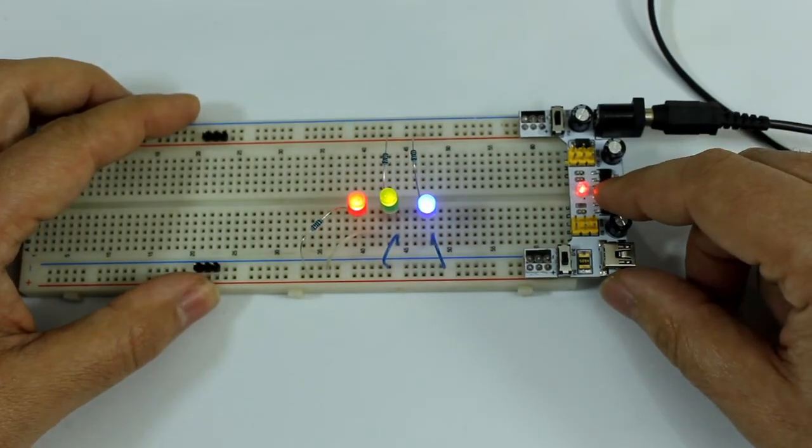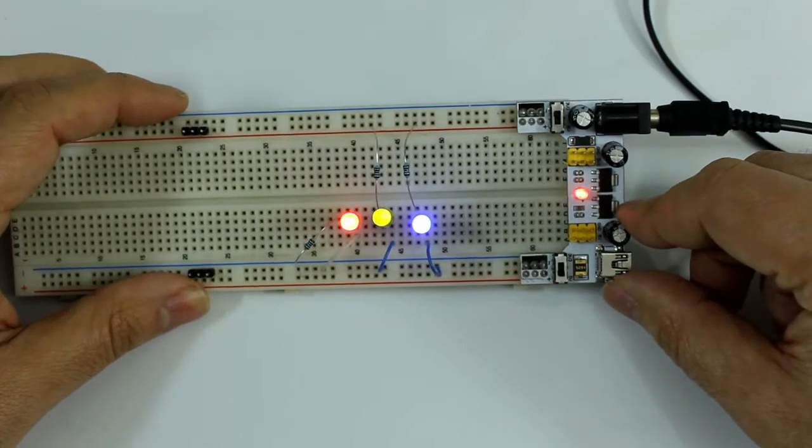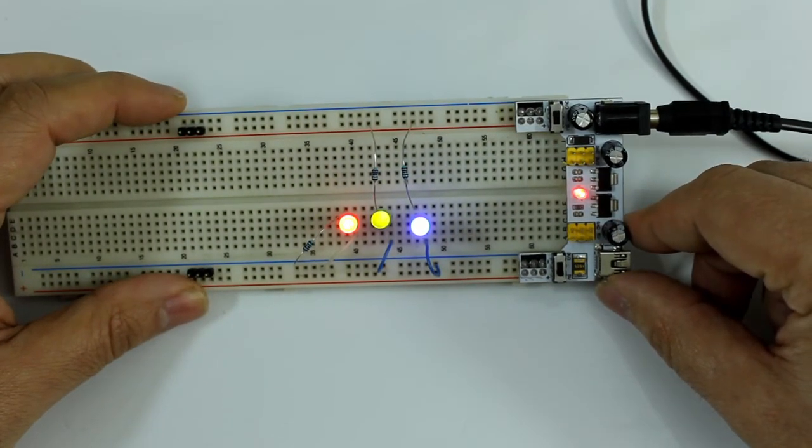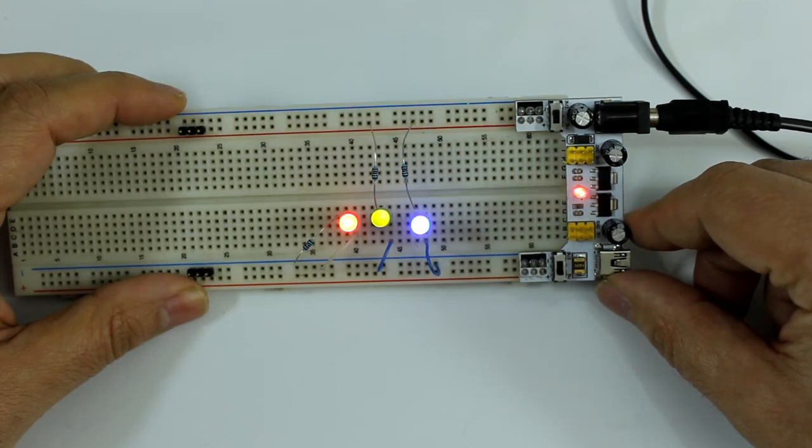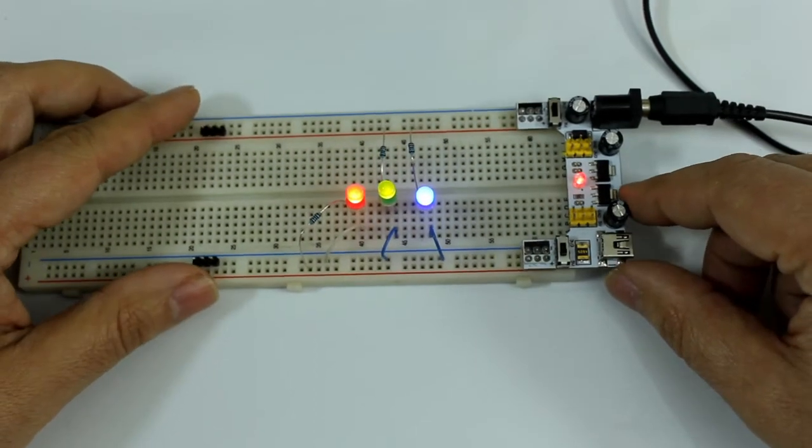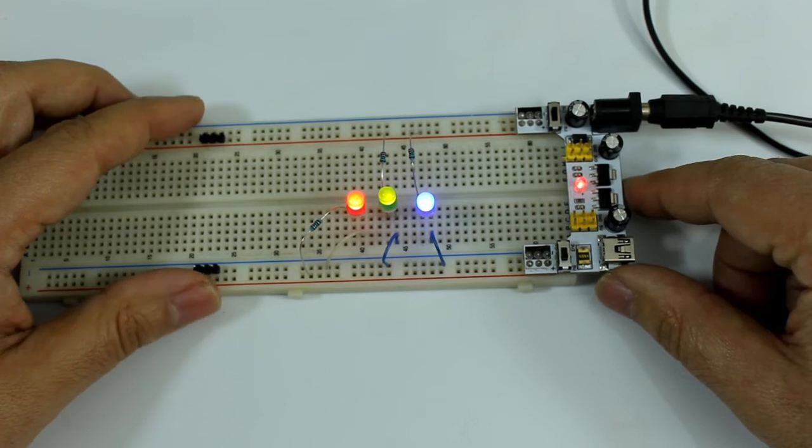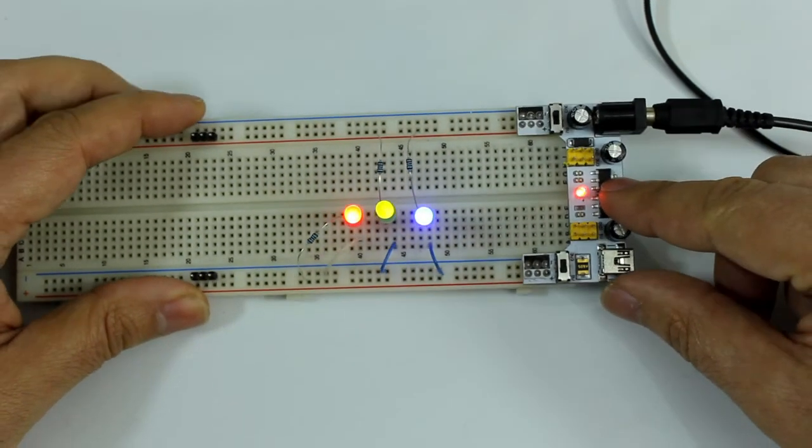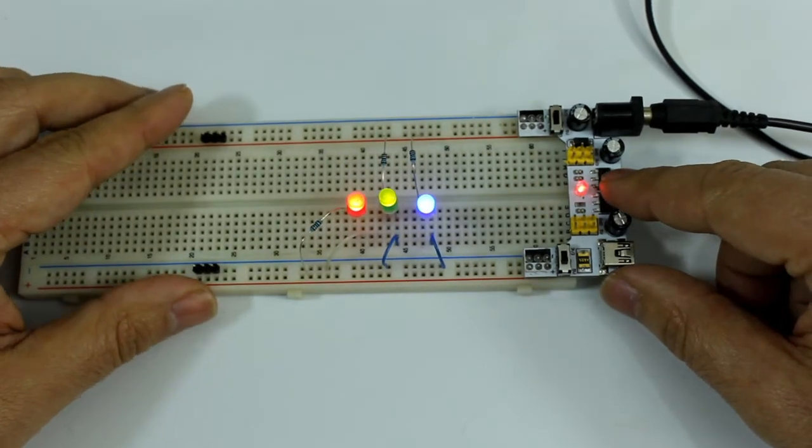I bought these plates from Banggood. Three of them cost me less than 6 euros, and in the description they say that the maximum current is 700 milliamps.